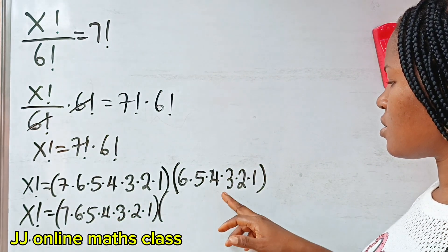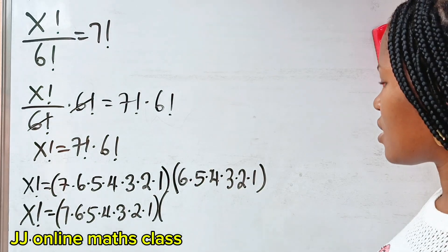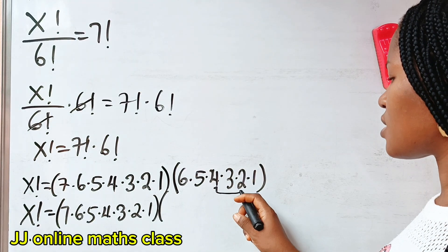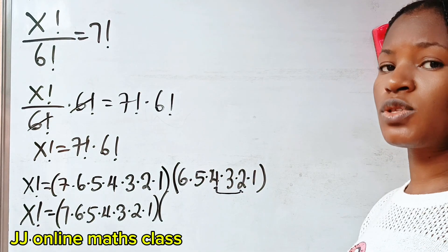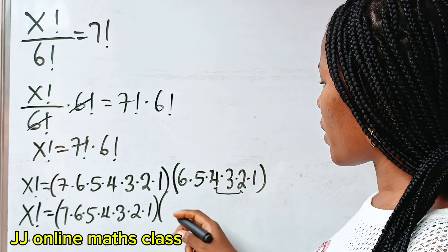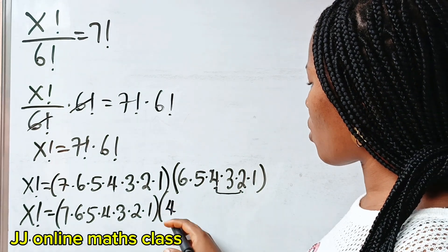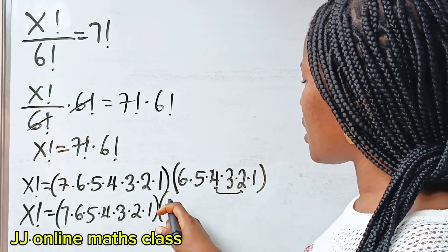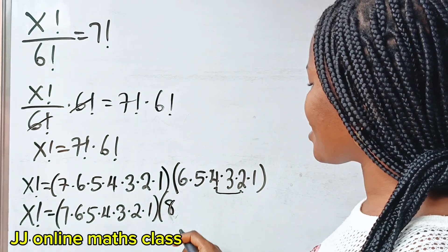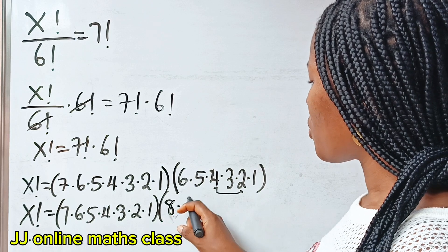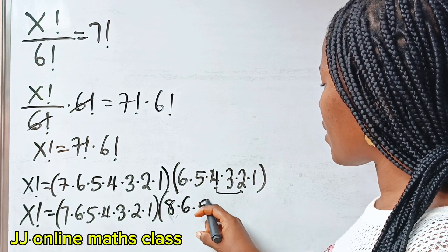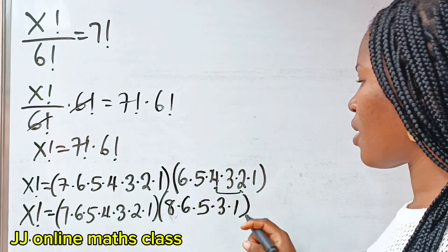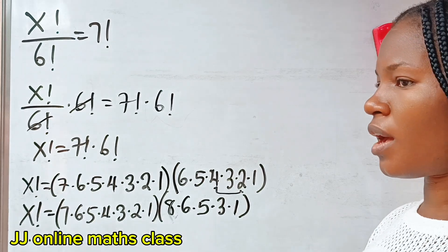When you look at this, you can see that 4 times 2 will give us 8. So we have — let's just write it as 8 already. 4 times 2 is 8. So this is the same thing as 8 multiplied by 6, multiplied by 5, multiplied by 3, multiplied by 1.